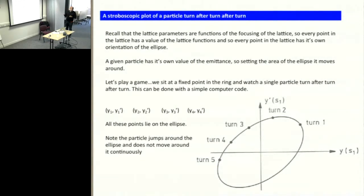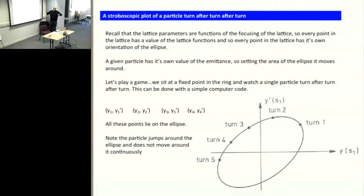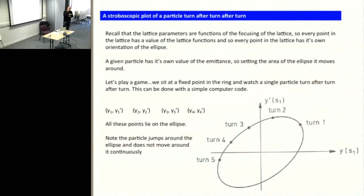Let's play a little game. We sit at a fixed point in the ring and watch a single particle turn by turn. This can be done with a computer code using our matrices. Turn one, it's at y1, y1-prime. Wait for a turn, it comes back: y2, y2-prime, then y3, y3-prime, y4, y4-prime. Because alpha, beta, gamma are the same at my fixed location, the ellipse is always the same and the area is conserved. Turn one, turn two, turn three, turn four, turn five — the particle just traces out an ellipse turn after turn, if I sit and watch it.